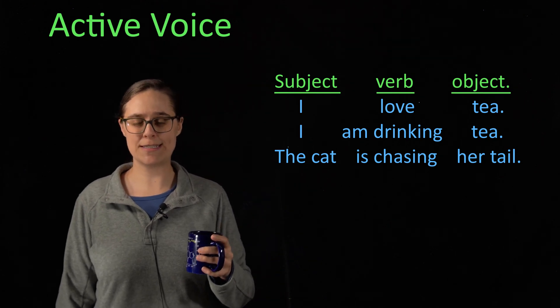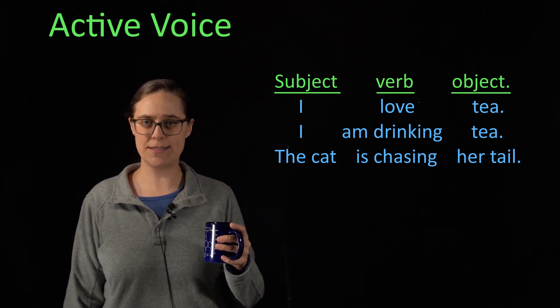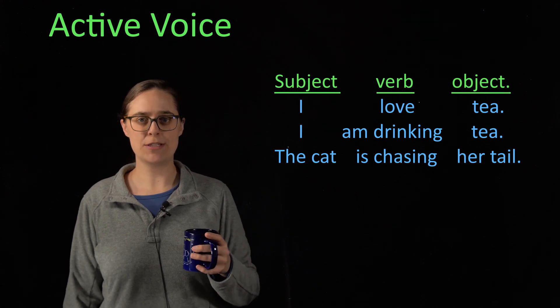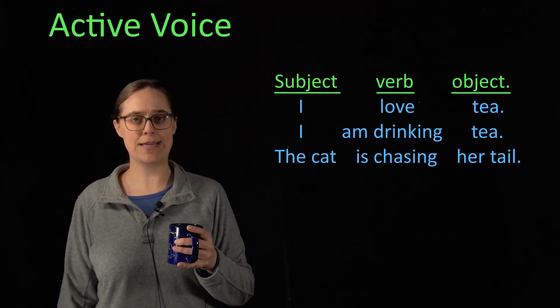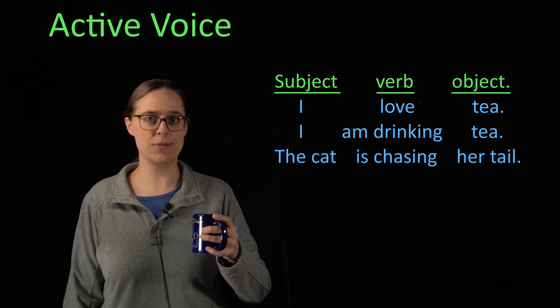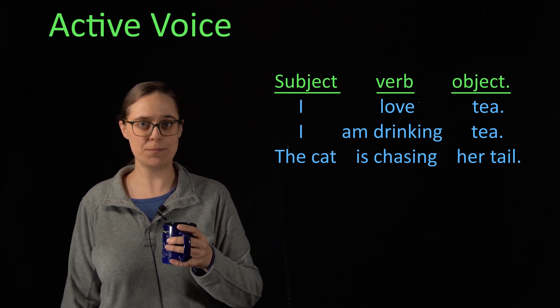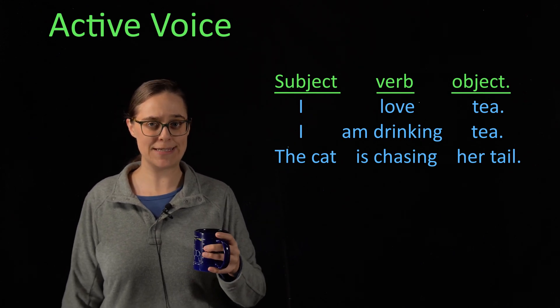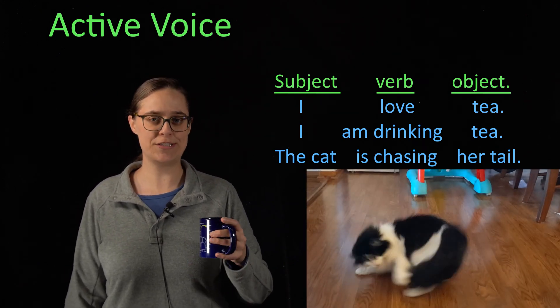In active voice, the subject of the sentence is performing the action specified by the verb. Active voice usually has the format of subject-verb-object or just subject-verb. I love tea. I am drinking tea. The cat is chasing her tail.